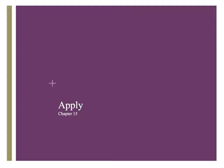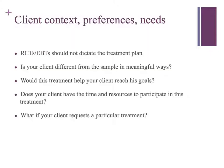So how do we apply the EBP model to clinical practice for your portfolio paper? You've got the research evidence part — you've found those articles, you're summarizing them and thinking about them in your annotated bibliography. Now you have to think about the other three components: client context, preferences, and needs. We can't just read a study and blindly apply it to our clients. If you've read a study about an effective intervention, you can't just assume it works for everybody. Think about how your clients differ from or are similar to the sample, whether those are meaningful differences, whether the treatment helps your client reach their goals, and whether they have the time and resources to participate.